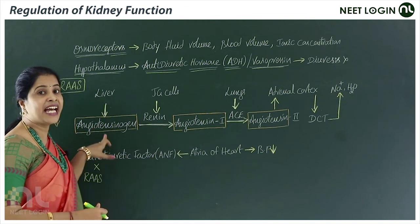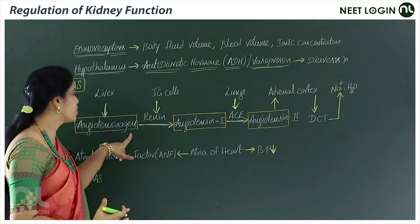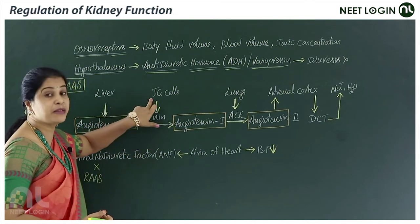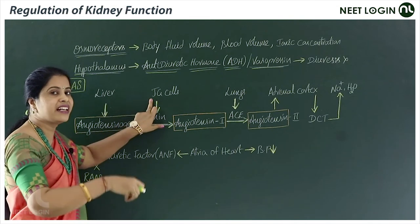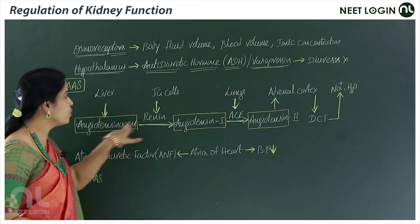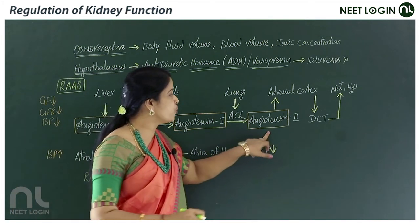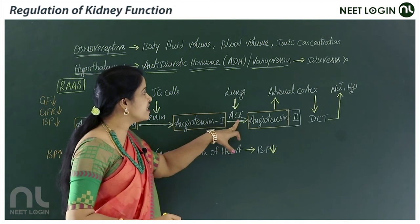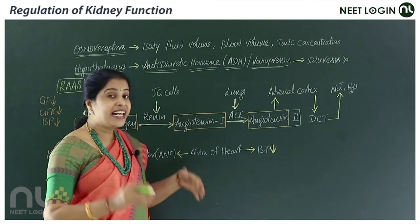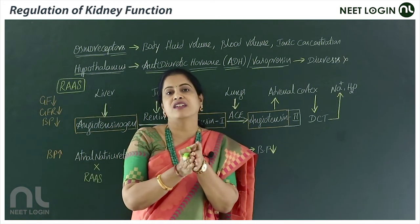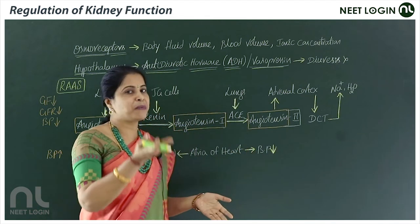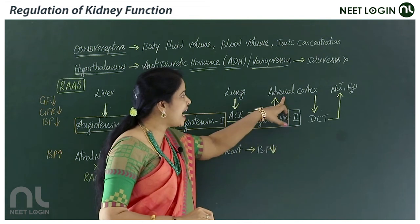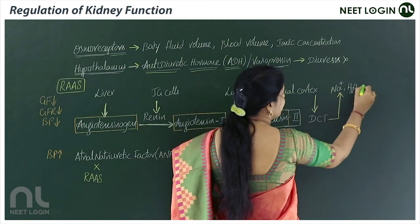When RAS is activated, the liver secretes angiotensinogen — the suffix '-gen' indicates the inactive form. This is activated into angiotensin I in the presence of renin, secreted by JG cells of the kidney. Renin converts angiotensinogen into angiotensin I. Angiotensin I is then converted into angiotensin II in the presence of angiotensin converting enzyme (ACE), secreted by the lungs. Angiotensin II is a powerful vasoconstrictor, raising blood pressure.